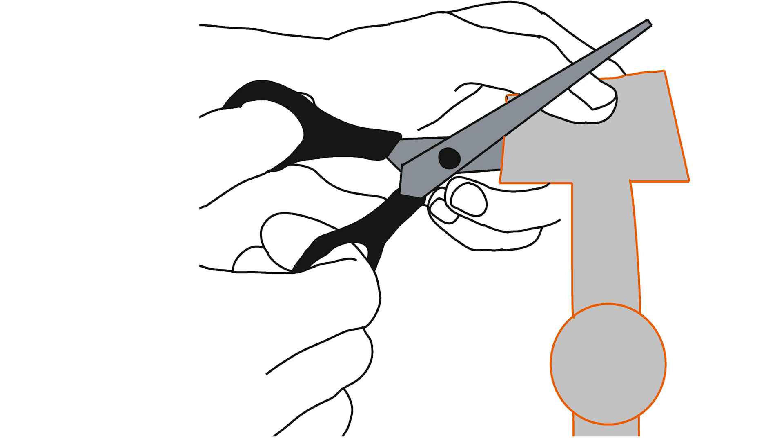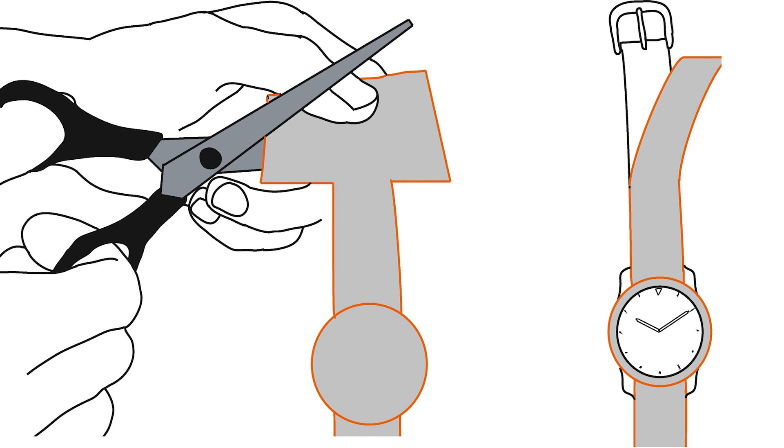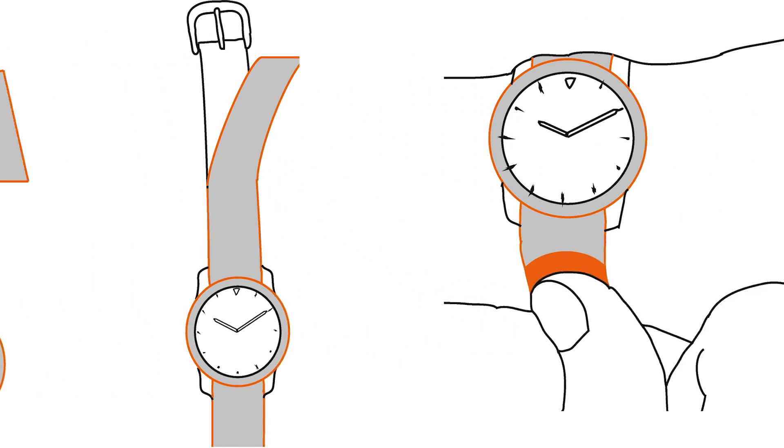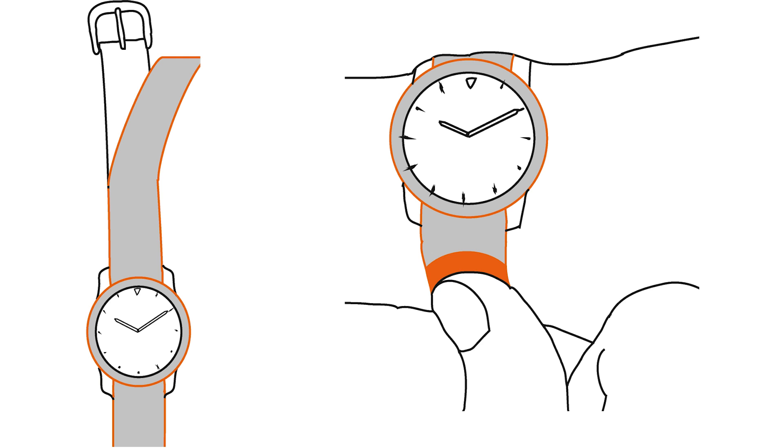For instance, we envision an adhesive sensor foil. End users can cut this foil to virtually any shape and size to fit onto the object. This enables multi-touch input on real-world objects and surfaces. For instance, users can make their personal items or their furniture interactive.